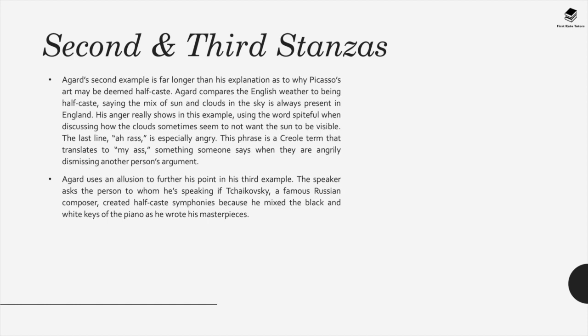Agard uses a phonetic Caribbean word — 'arras' — which is a Creole expletive translating roughly to 'my arse,' showing how angry he is and dismissing the racist's argument. He also alludes to Tchaikovsky, asking: if Tchaikovsky mixes black and white piano keys, does that create half-caste symphonies — and does this make his work less of a masterpiece? Of course it doesn't. The whole point is to show that mixing creates richer and more colourful life.